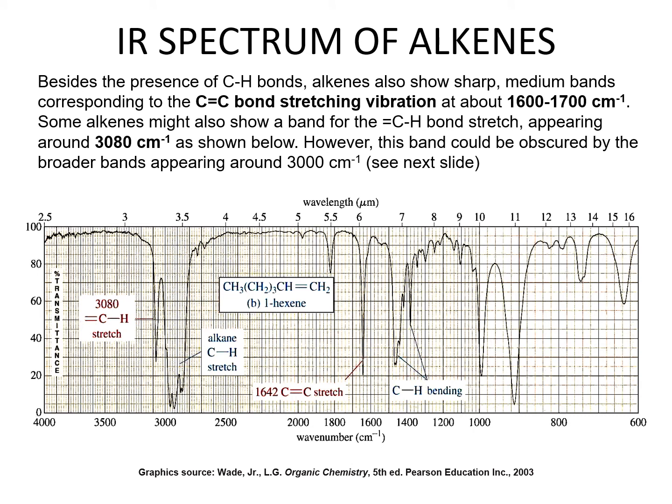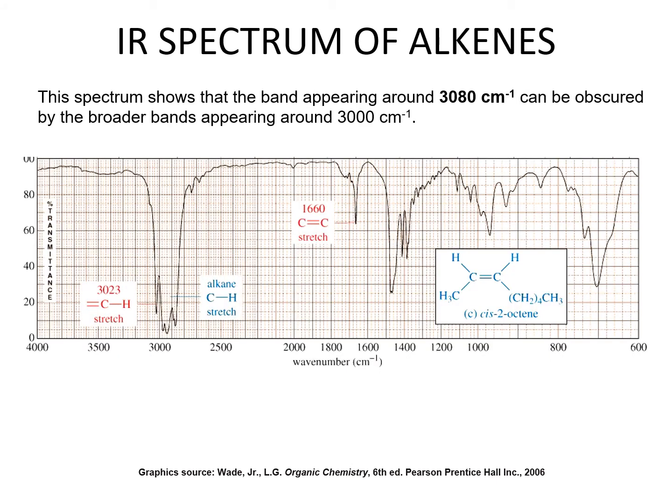Besides carbon-hydrogen bonds, alkenes also show sharp medium bands corresponding to the carbon-carbon double bond stretching vibration at about 1600 to 1700 centimeters to the minus one. Some alkenes might also show a band for the carbon-proton from the double bond stretch appearing around 3080 centimeters to the minus one. However, this band could be obscured by the broader bands appearing around 3000. This spectrum corresponds to cis-2-octene.